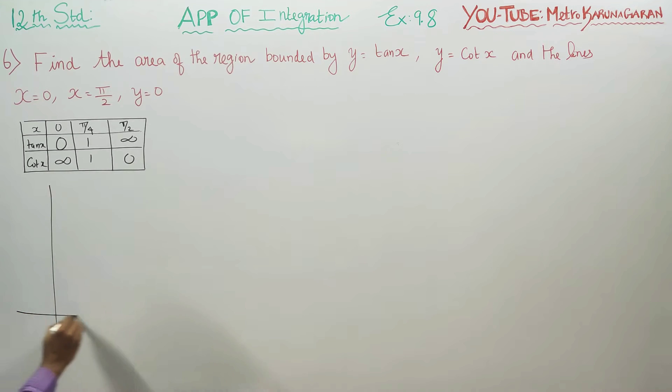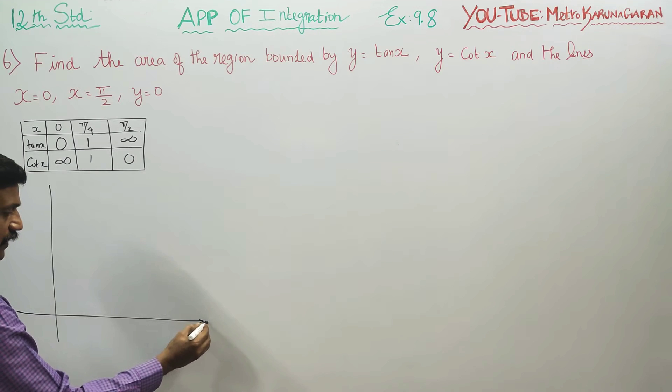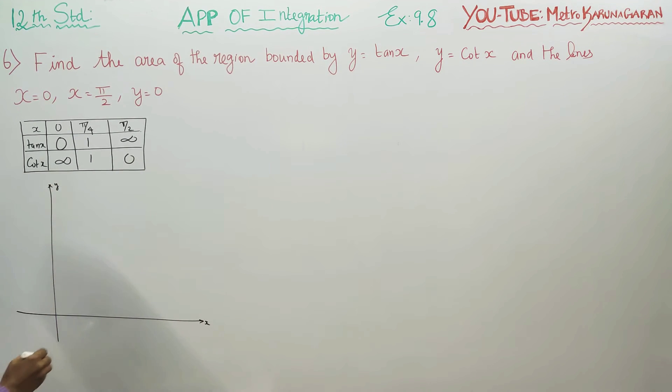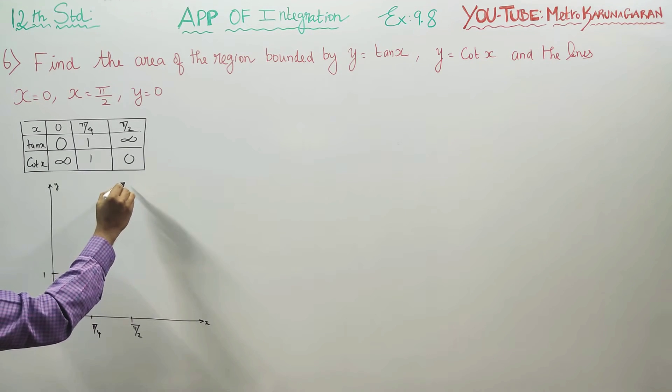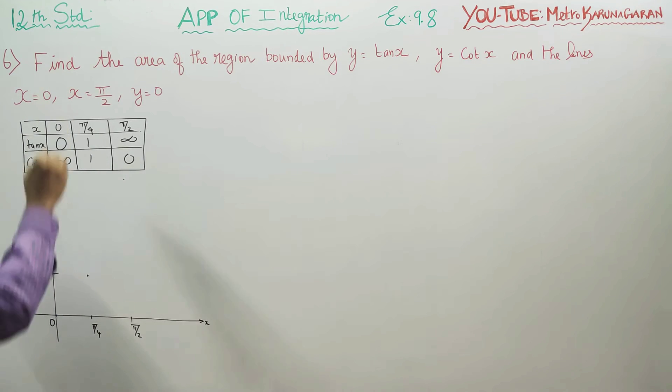If you start drawing a diagram for tan x and cot x, this is my x axis, this is my y axis. My 0 starts here, 45 is here and 90 is here. Tan 0 is 0, tan starts here. Here 1 is 1, tan 45 is 1, tan 90 is infinity.